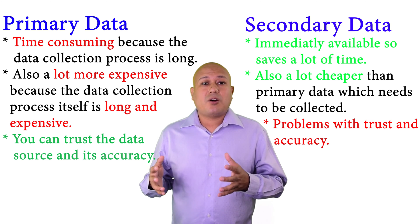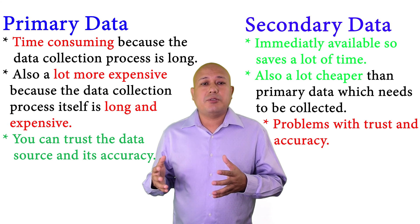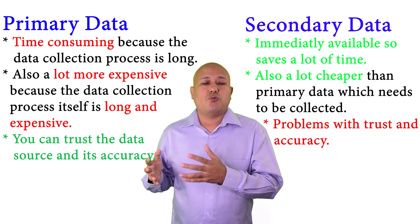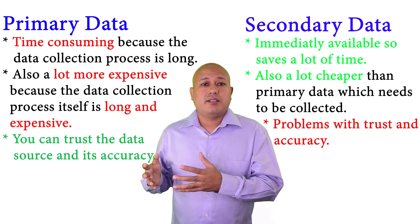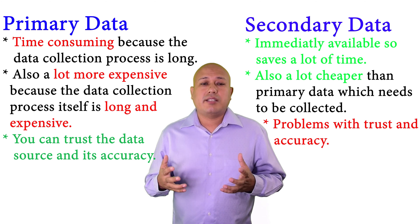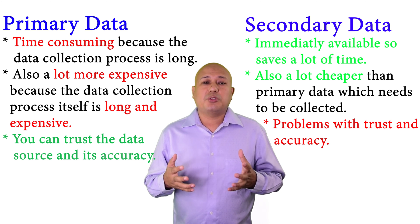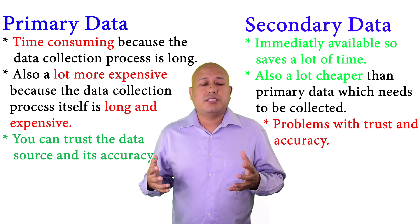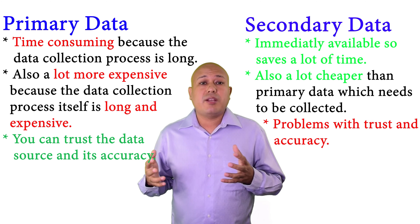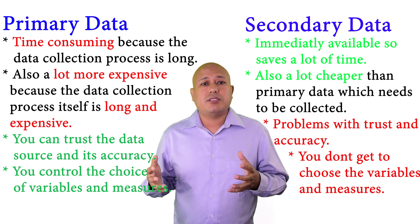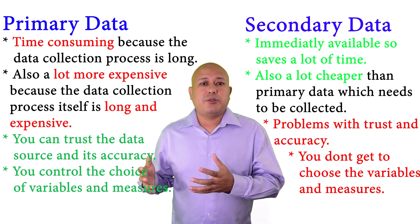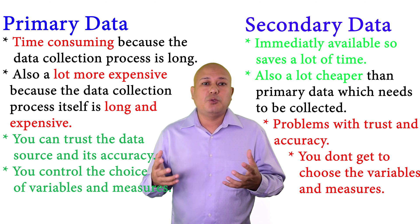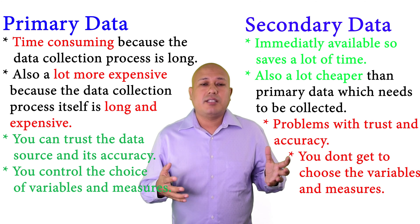Tied to this is uncertainty about how accurate the data collection mechanism was when the secondary data was being collected. Also, the measures used in secondary sources may not fit your requirements. For example, a secondary source might use a Likert scale of one to seven, whereas your research might require a one-to-five scale.